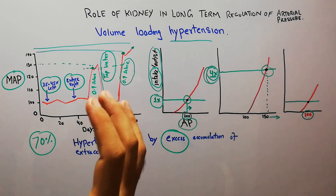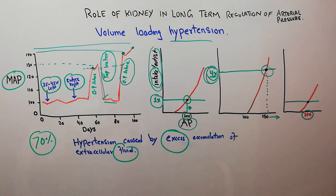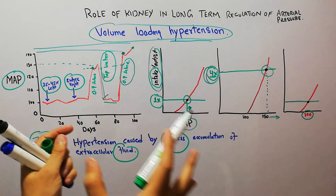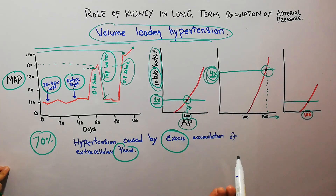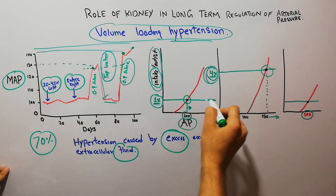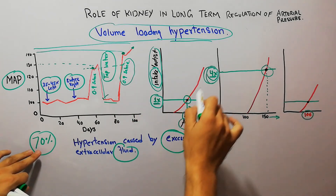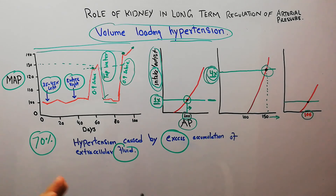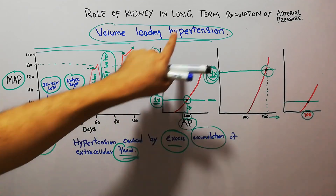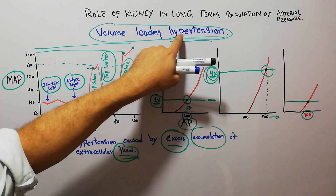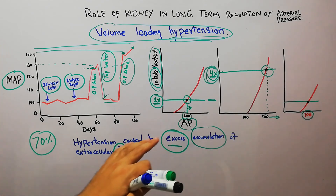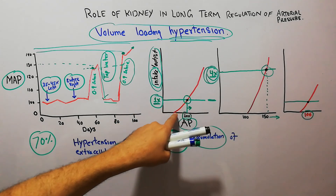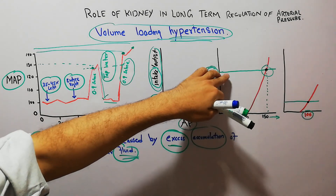This experiment demonstrates the effect of volume loading hypertension: when intake of salt and water increases four to five times and kidneys are not functioning properly, there is accumulation of excess fluid in the body leading to hypertension. Volume loading hypertension is hypertension caused by excess accumulation of extracellular fluid, which can result from disturbance in renal function or increased intake of salt and water. Thanks for watching.